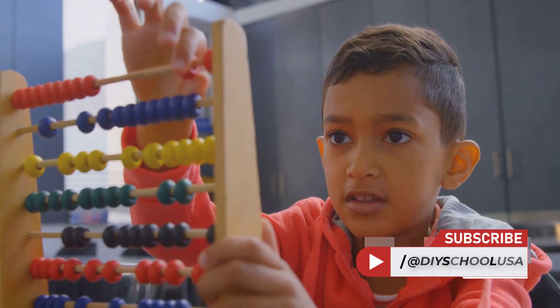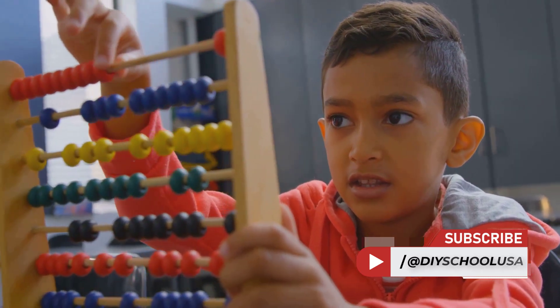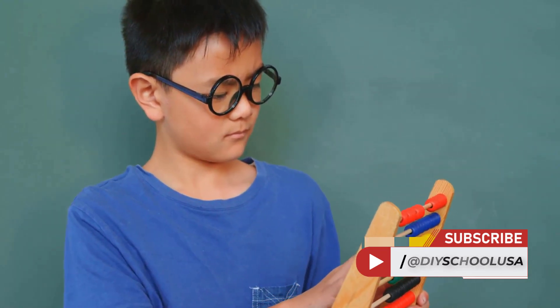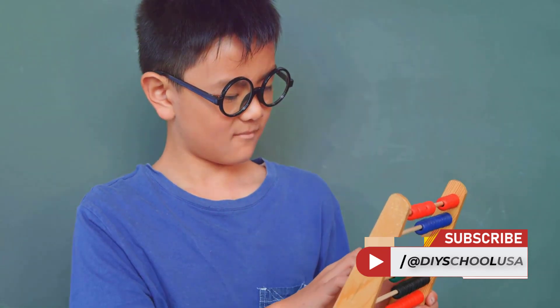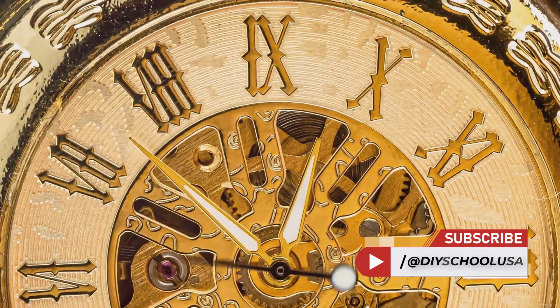But there's more to this system than just the number 60. The Babylonians also introduced an important concept that we still use today, a true place value system. This meant that the position of a digit in a number determined its actual value, a feature that is ubiquitous in our modern number systems.